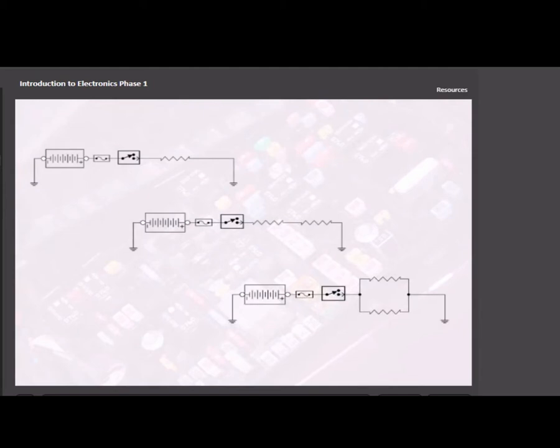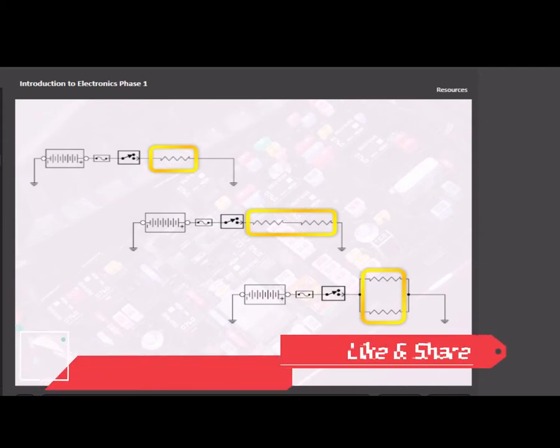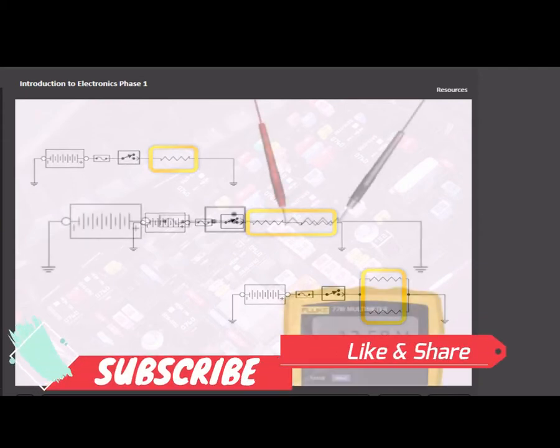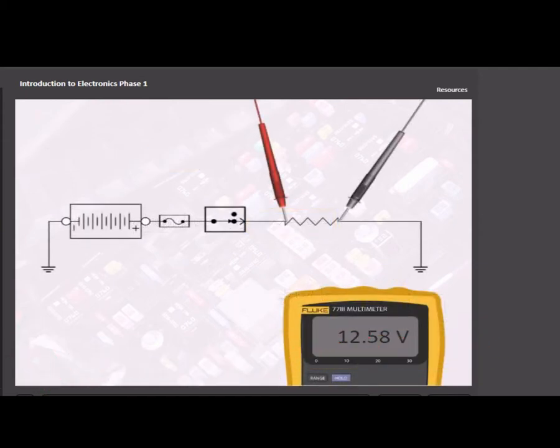The amount of voltage dropped depends on the circuit type and the number of resistors or loads in the circuit. Simple circuits contain a single load, and therefore almost all of the voltage drops across the load.